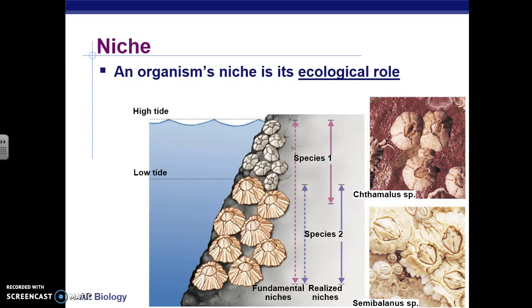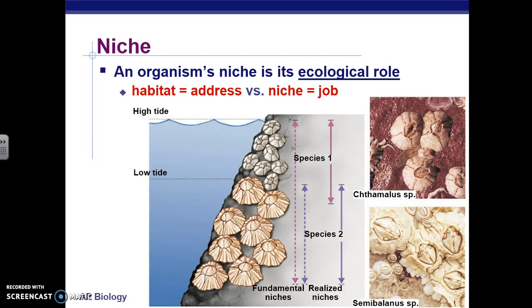The role that an organism plays in a community is called its niche. To put this into relatable terms: in Pathways, people have niches. My niche at Pathways is that I teach science — more specifically, I teach chemistry and AP biology in room 412. That's my niche at Pathways. Organisms similarly have the same sort of niche in a community.